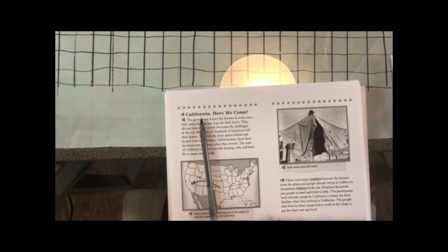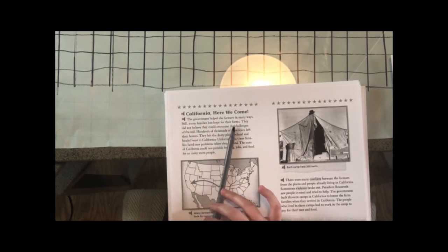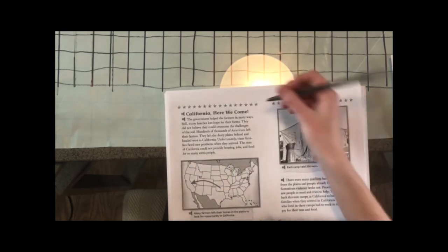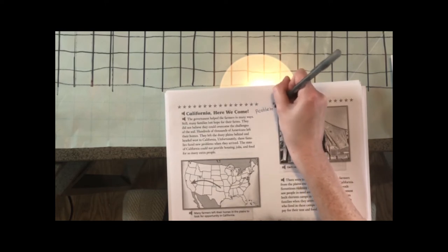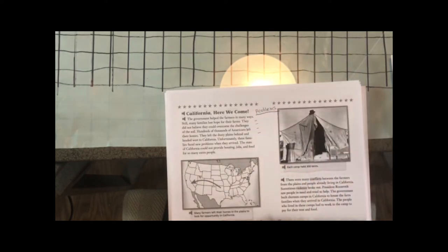We're going to continue reading on the next page where it says California. The government helped the farmers in many ways, still many families lost hope for their farms. They did not believe they could overcome the challenges of the Dust Bowl. Hundreds of thousands of Americans left their homes. They left the dusty plains behind and headed west to California. Unfortunately, these families faced new problems when they arrived. The state of California could not provide housing, jobs and food for so many extra people. What are some of the problems we read about in that section? Go ahead and write down, you can just use bullet points, what were some of the problems from that section. Now we're going to keep reading and see if we find some solutions.